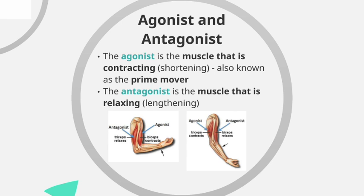The antagonist is the muscle that is relaxing — lengthening and getting thinner. So the agonist contracts, the antagonist relaxes. In the diagram, during flexion of the elbow the agonist is the biceps because it's contracting, and the antagonist is the triceps because it's relaxing. During extension of the arm at the elbow, the agonist is the triceps — contracting and pulling on the radius and ulna — whilst the biceps is the antagonist because it's relaxing.